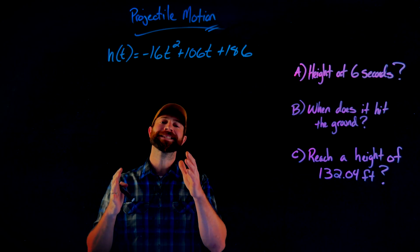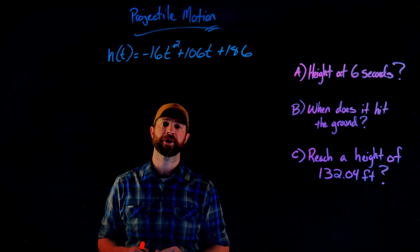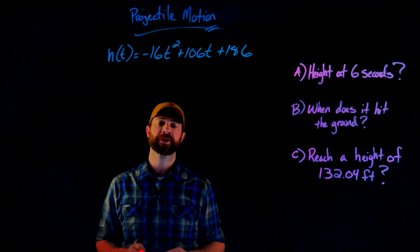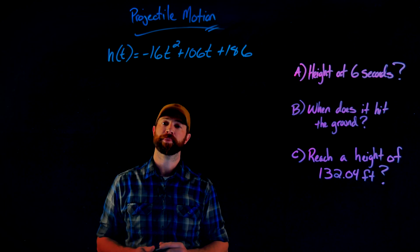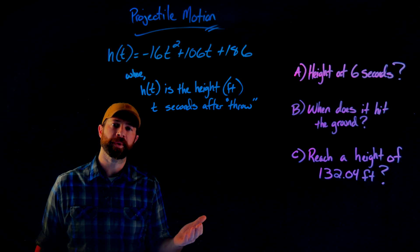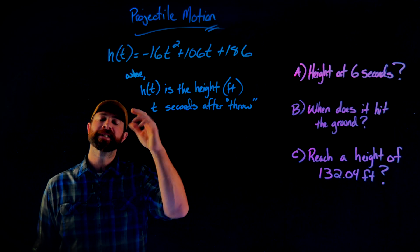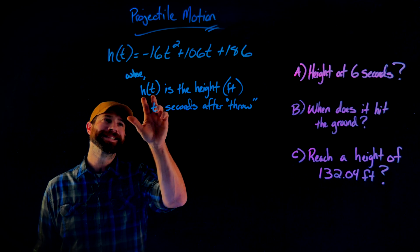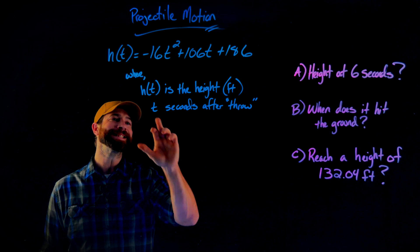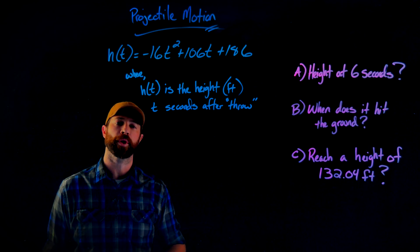Important to note is that this is a quadratic relationship because of this t squared term here. We need to make sure that we work with the quadratic properly. Let's make sure we understand our variables. h is the height of the object with respect to t. It's the height in feet t seconds after the object is launched or thrown.